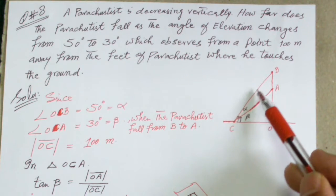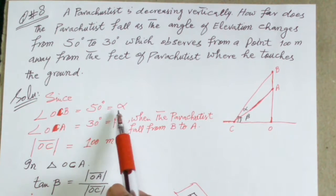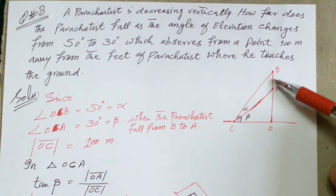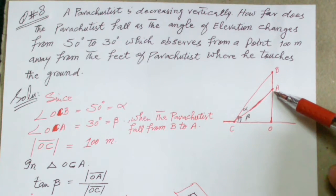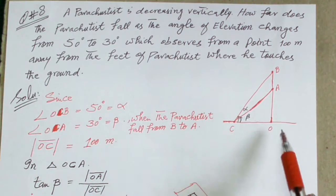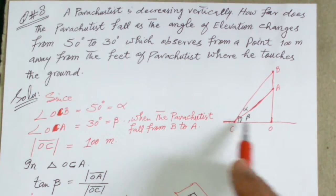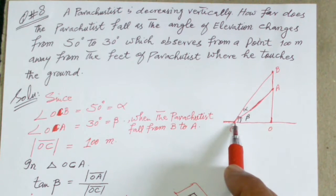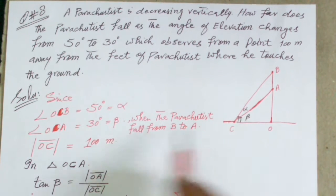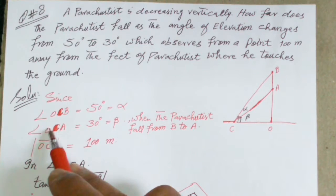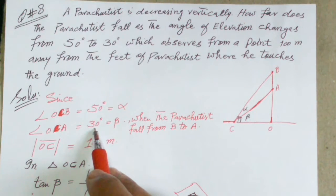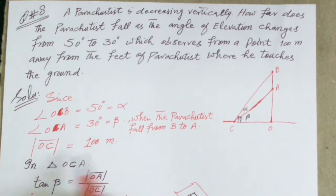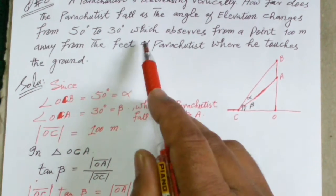Angle OCB is equal to alpha, which is equal to 50 degrees, when the parachutist falls from point B to point A. The angle changes from 50 degrees to 30 degrees. That is, angle OCA is equal to beta, and beta is equal to 30 degrees.